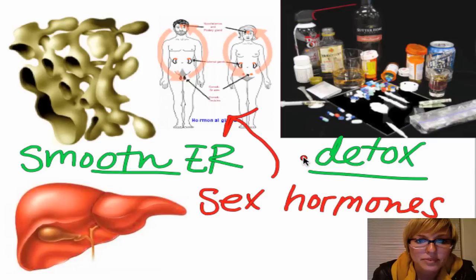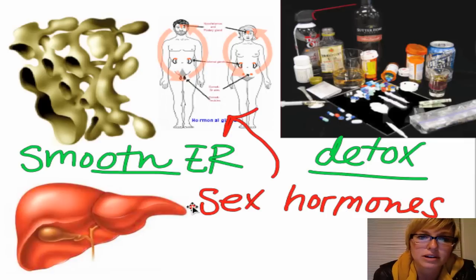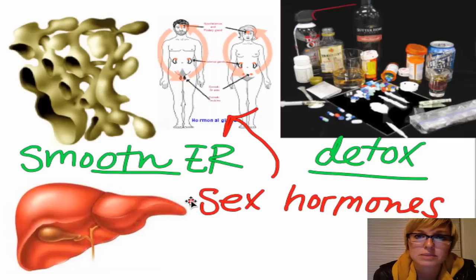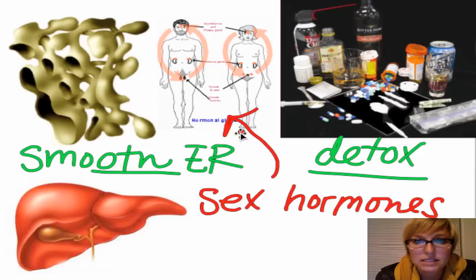This is a hormone — it's an oil made from an oil — and this is what gives us our sexual characteristics: estrogen and testosterone. The smooth ER is in charge of producing those things, specifically in the glands involved in the endocrine system like the adrenal glands, your ovaries, and your testes. So the smooth ER is very, very important.